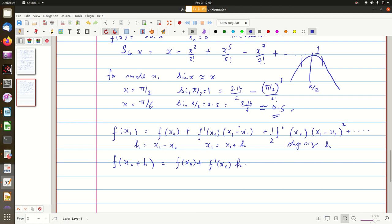Plus half f double dash at x0 times x1 minus x0 is h. So h squared. So that is why we call them order of h squared terms like that.